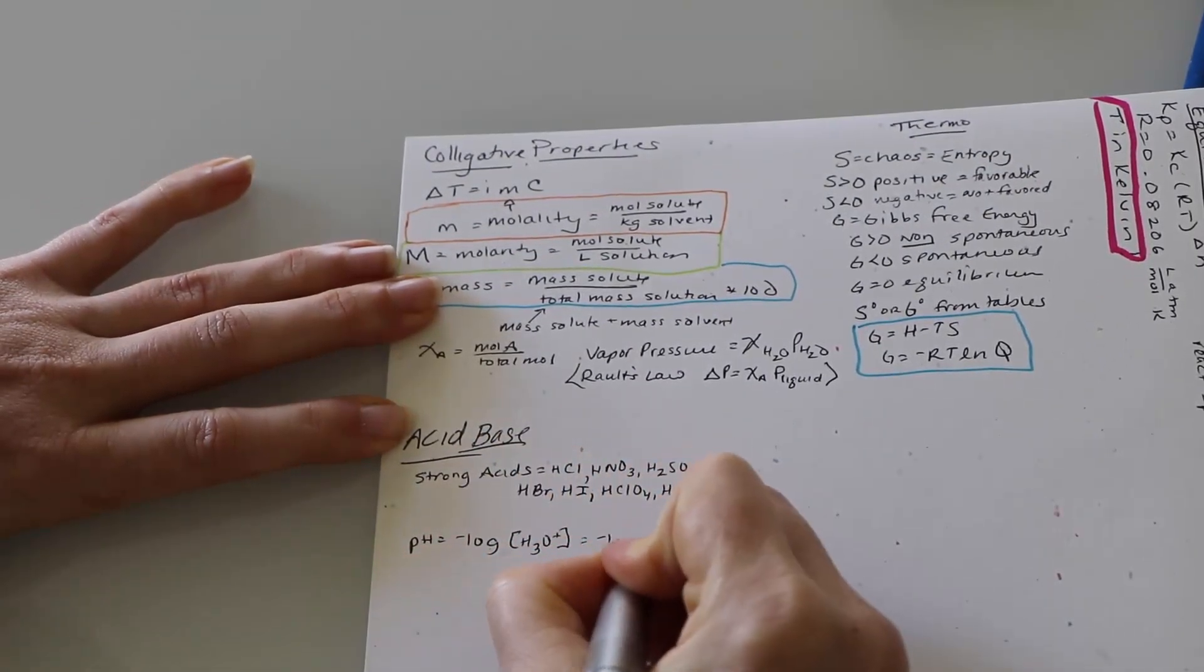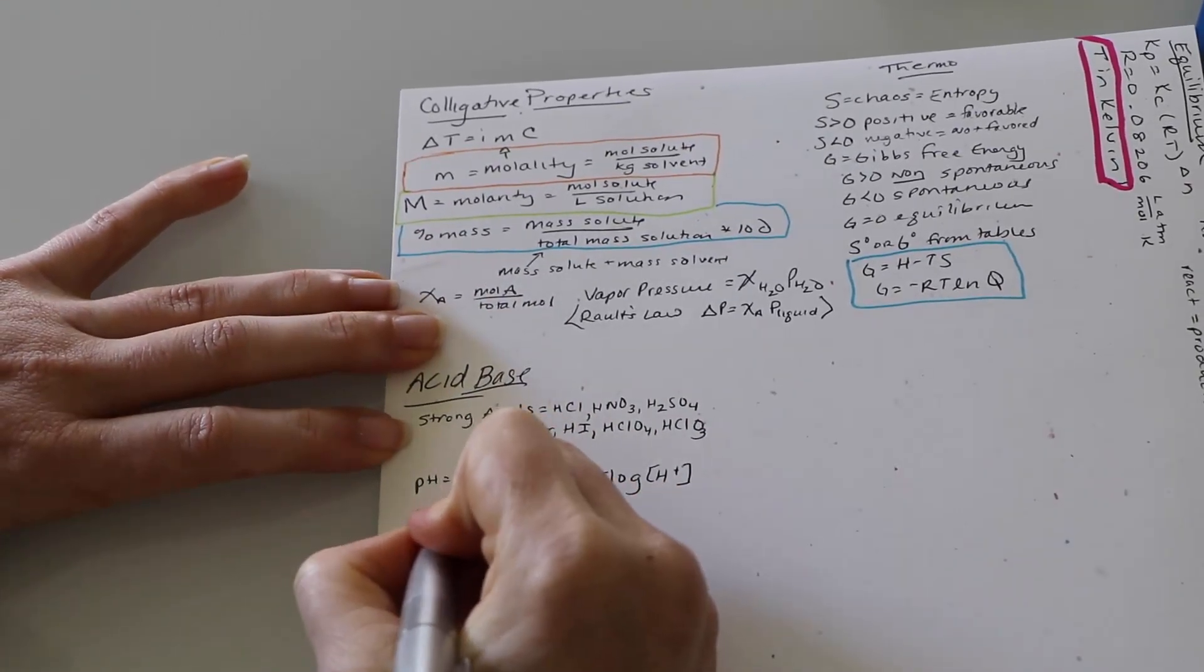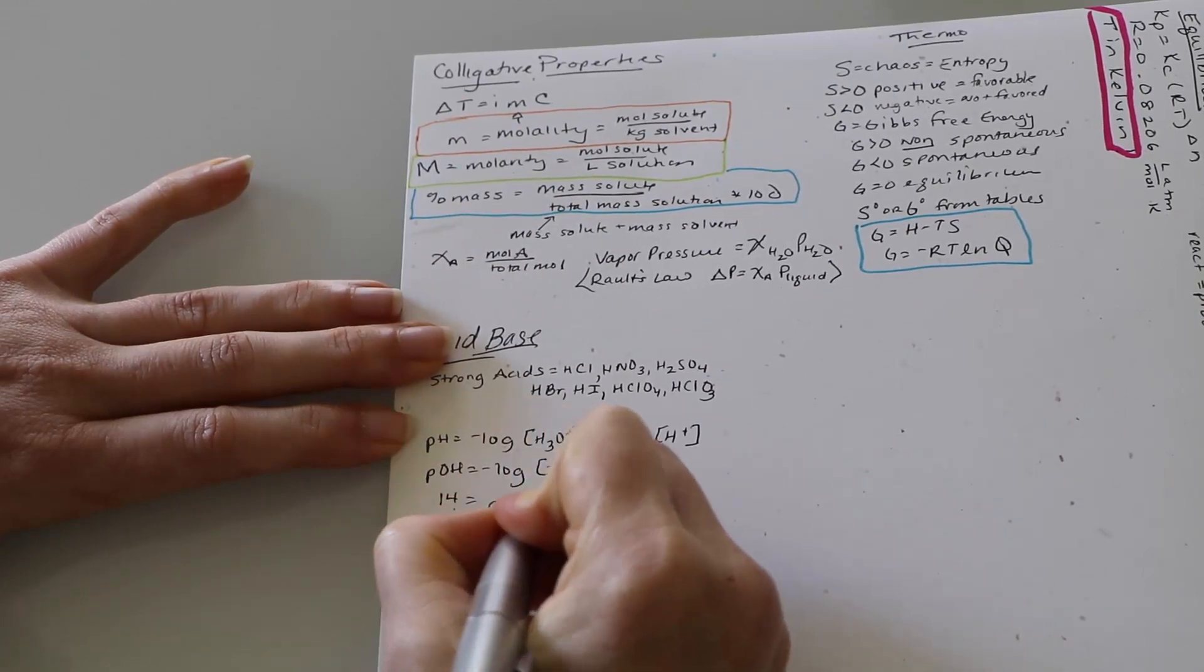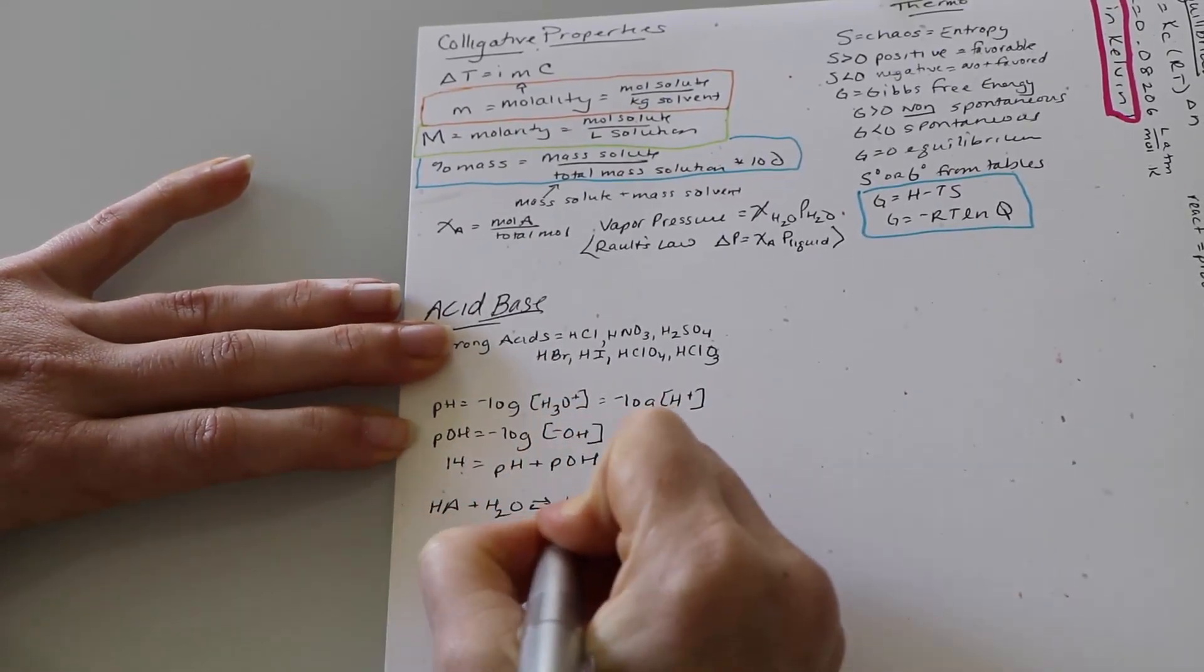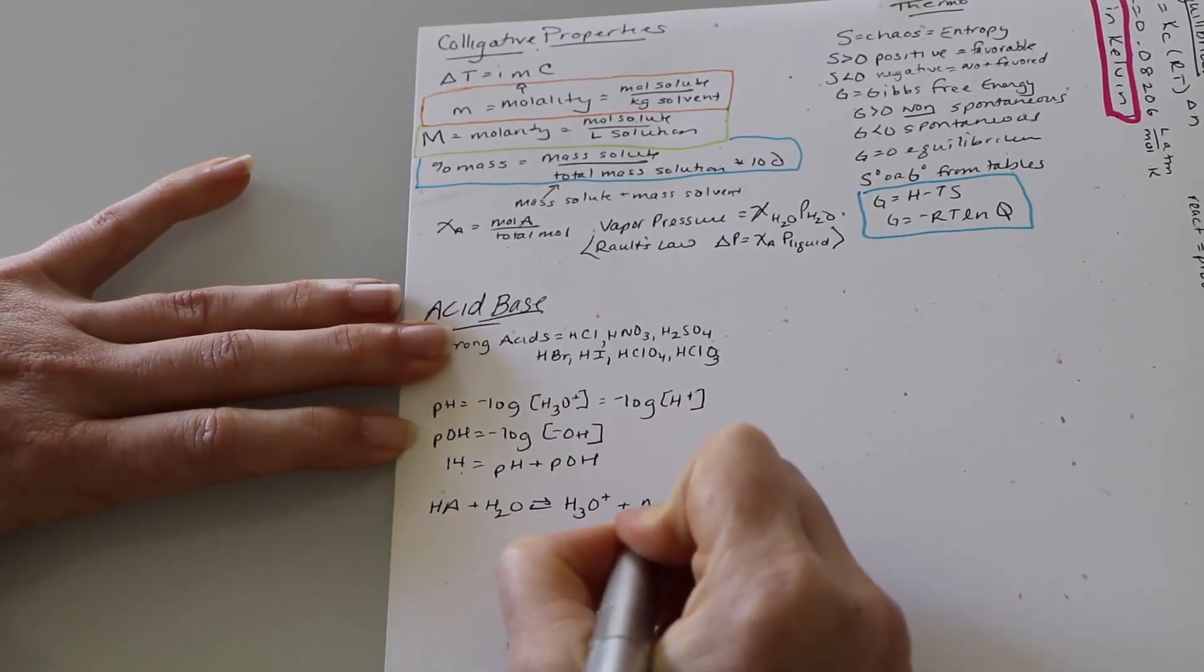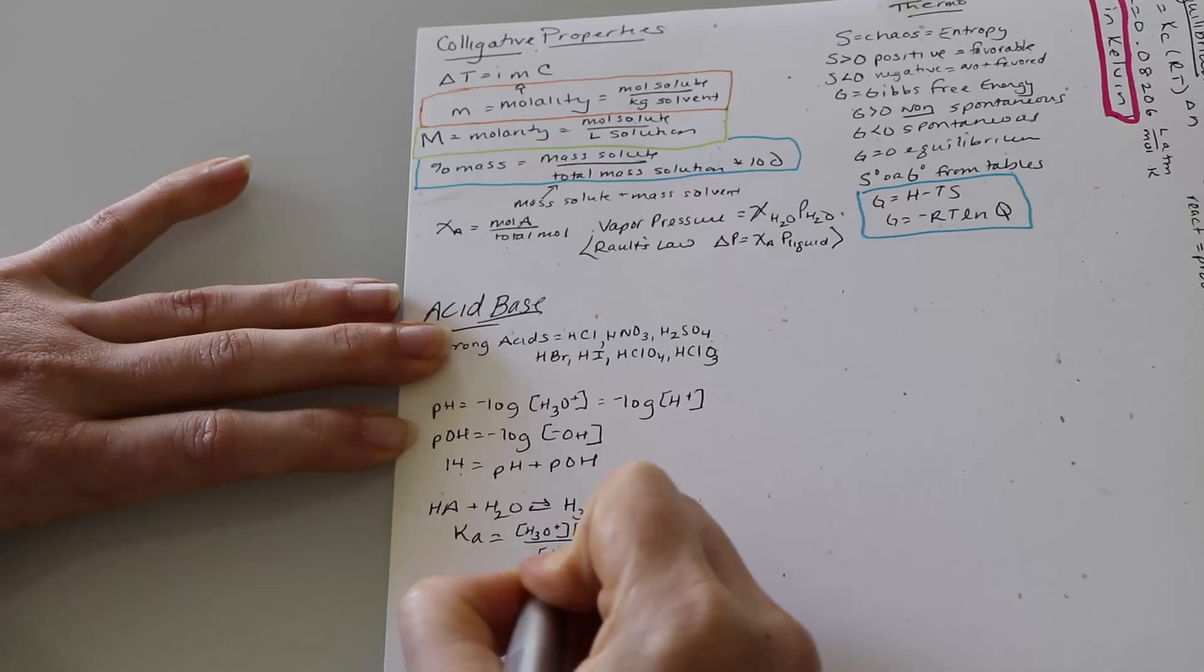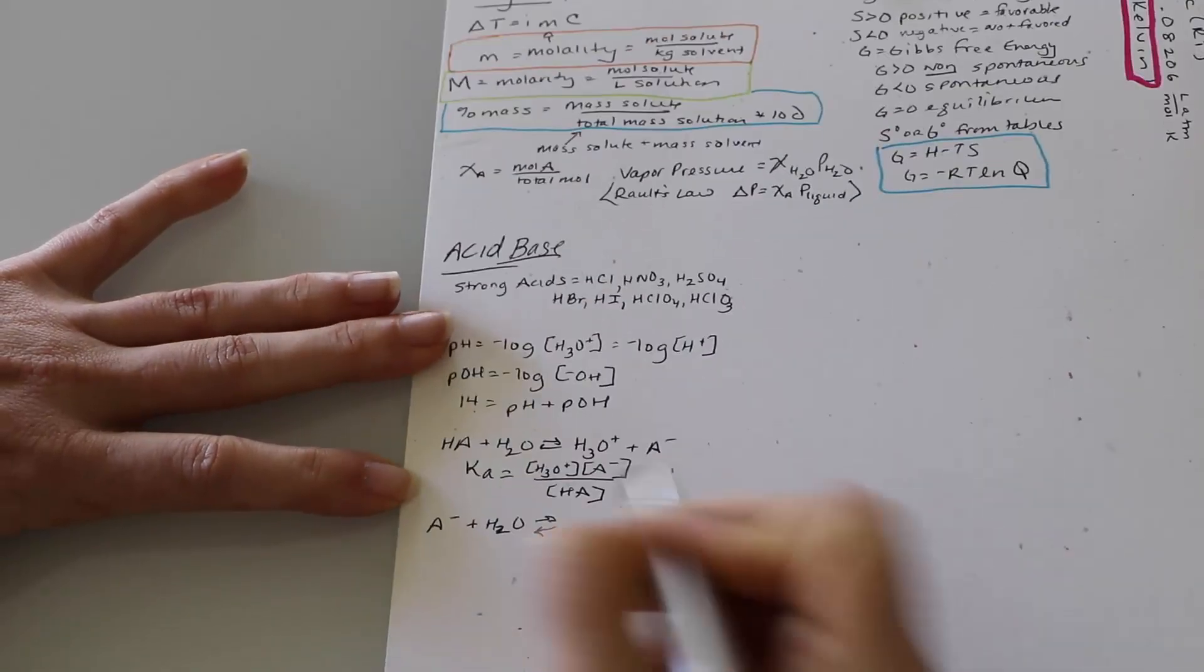Then we have a series of equations and things that sometimes students can screw up. So we have pH equals the negative log of the hydronium ion. The hydronium ion is H3O plus. It's also the negative log of the hydrogen ion. Hydronium and hydrogen are used interchangeably. pOH is then the negative log of the concentration of the hydroxide. pH plus pOH equals 14.